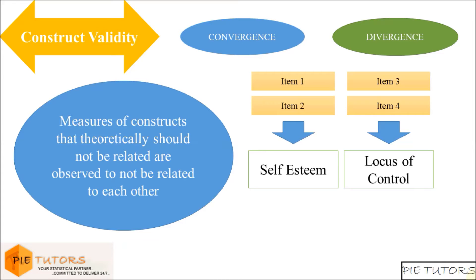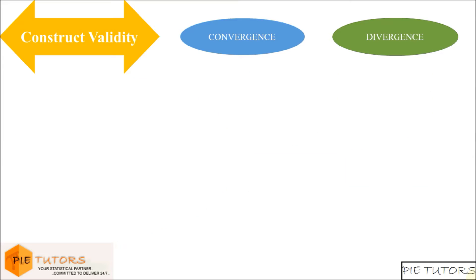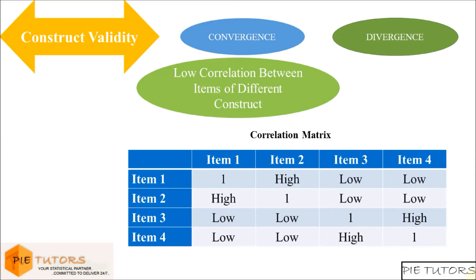If we have discriminate validity, the relationship between the items from different constructs should be very low. In other words, if divergent validity is present in the data set, we will observe that each item of self-esteem construct will have low correlation with each item of the locus of control construct.